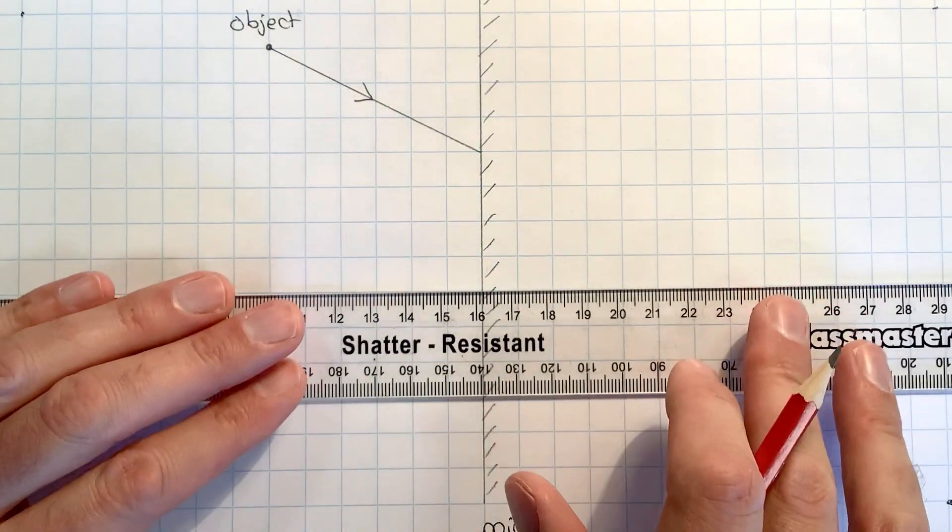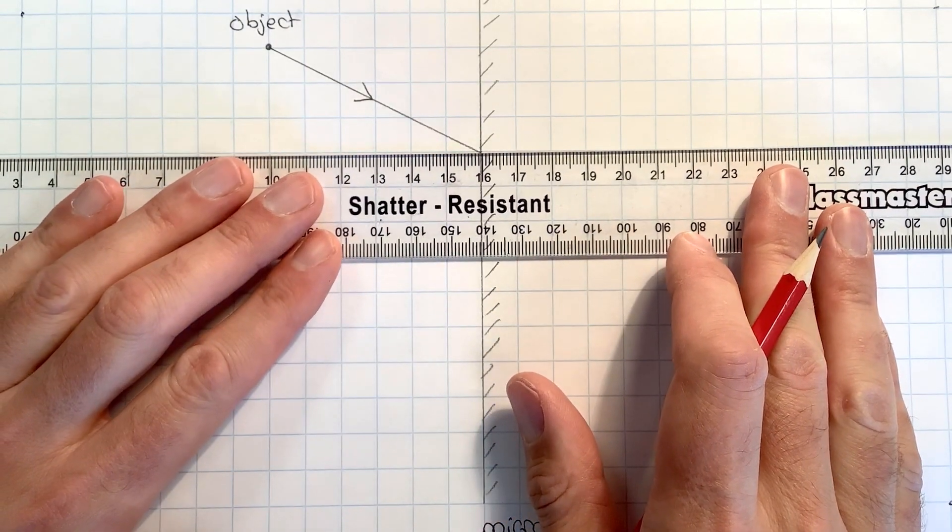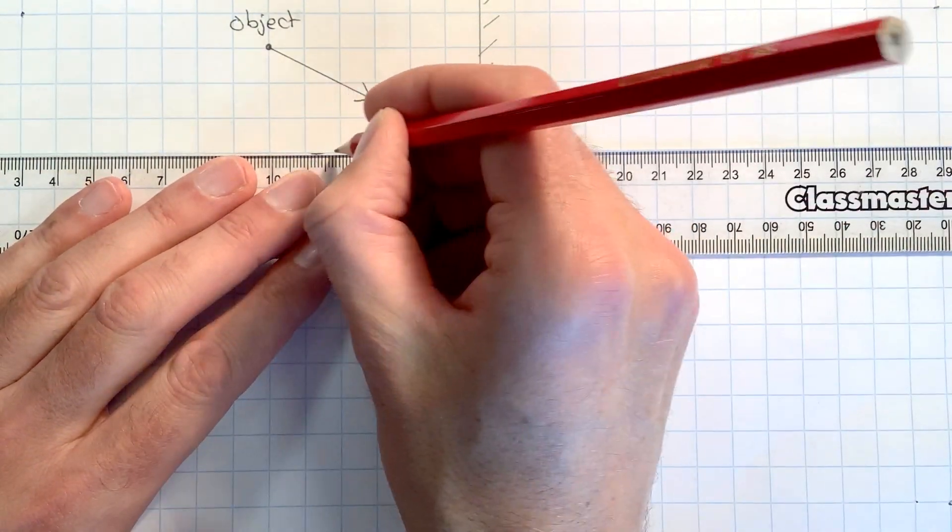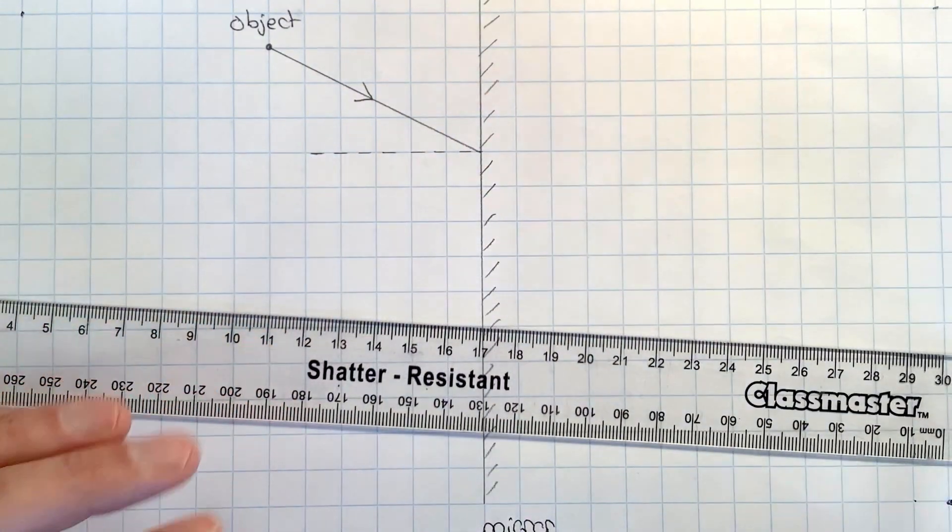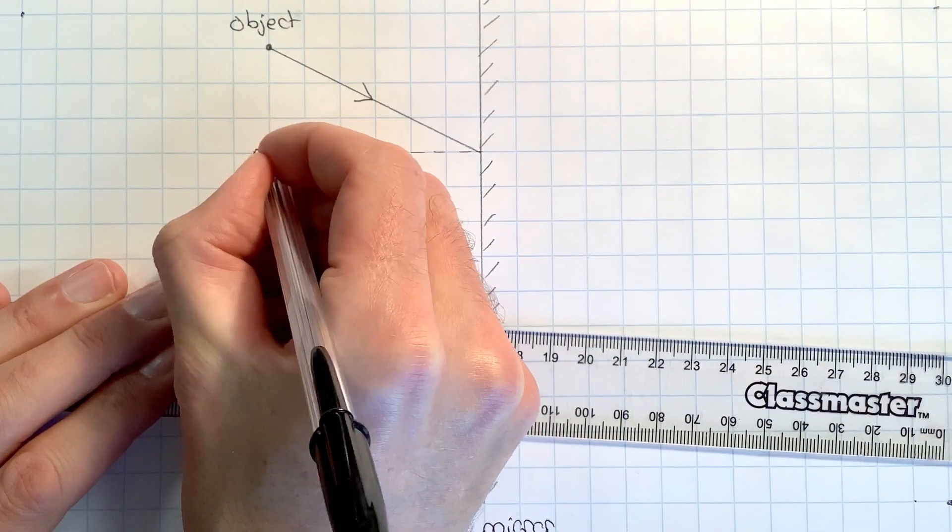Now where the light ray hits the mirror, I need to draw in a dotted line which is called the normal. Having drawn that in, I'm going to label that as normal.